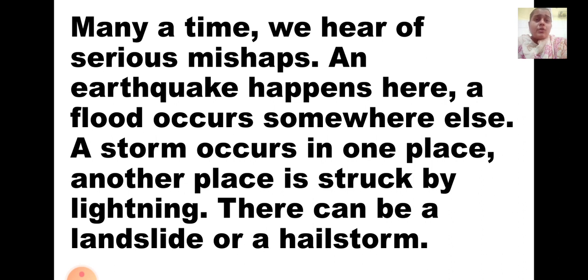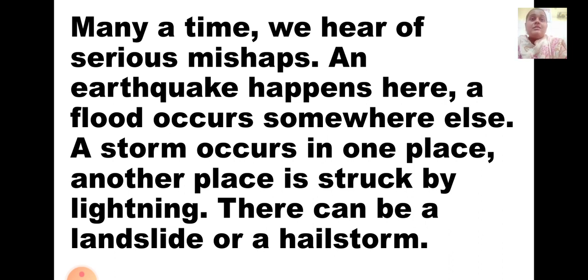These natural calamities occur because there is an imbalance in nature, and for this imbalance people are responsible. We are responsible because we do not take care of the environment. We use it in a very destructive way, and at the time when the earth cannot take it any more, natural calamities take place in the form of earthquake, tsunami, flood, lightning, and hailstorm. These cannot be stopped by anyone, and when they occur they cause huge damage to all of us.